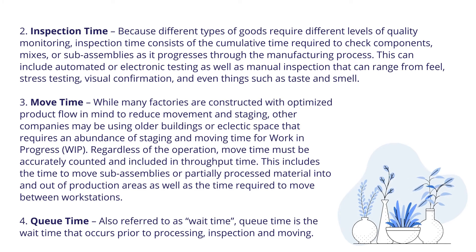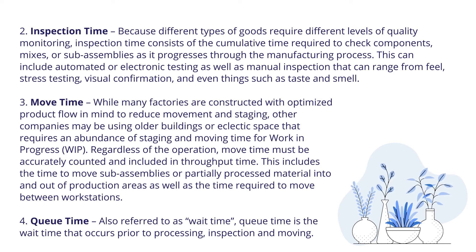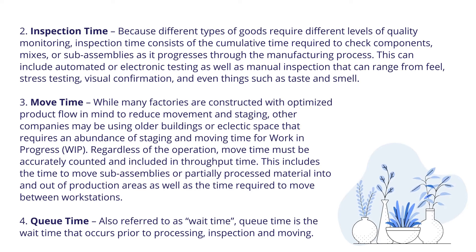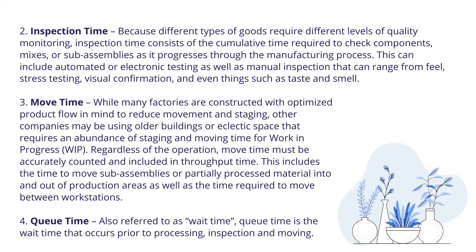Third, move time. While many factories are constructed with optimized product flow in mind to reduce movement and staging, other companies may be using older buildings or eclectic space that requires an abundance of staging and moving time for work-in-progress (WIP). Regardless of the operation, move time must be accurately counted and included in throughput time, including the time to move sub-assemblies or partially processed material into and out of production areas, as well as the time required to move between workstations. Fourth, cue time — also referred to as wait time — is the wait time that occurs prior to processing, inspection, and moving.